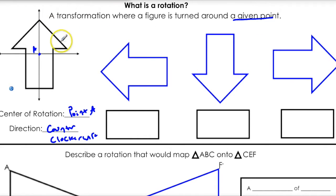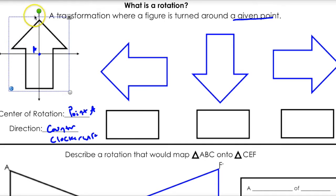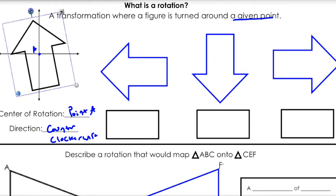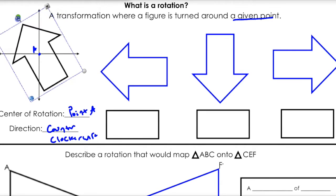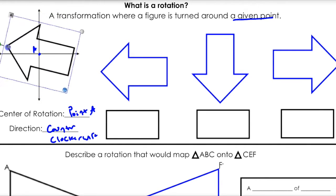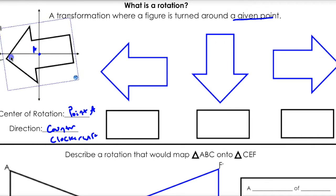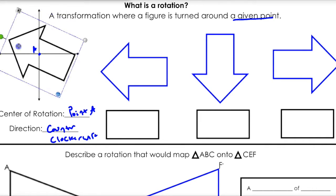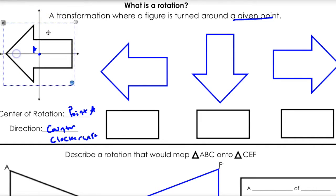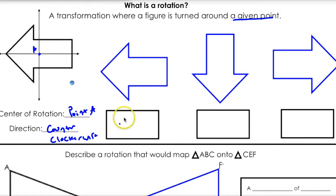Let's start by rotating our arrow around point A. Every time I rotate it by its side, that's a 90-degree rotation. When it goes from here to here, that is a 90-degree rotation. These two look the same, so that is a 90-degree rotation.